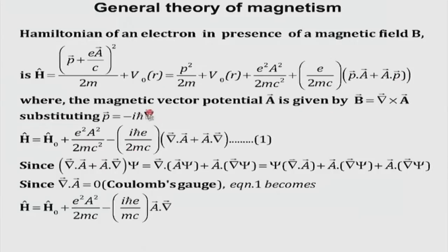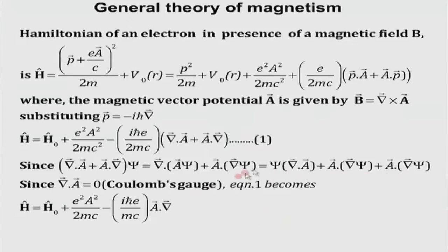I substitute p in terms of −iħ∇, which gives equation number 1. These operators are always meaningful when acting on a wave function. If I take ∇·A and A·∇ acting on wave function ψ, I can expand them, and as seen in the electromagnetism course, we take the divergence of A to be 0 — the Coulomb gauge. This simplification gives us the modified Hamiltonian in the presence of the magnetic field.